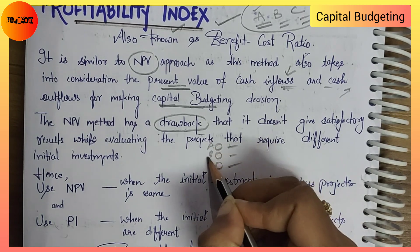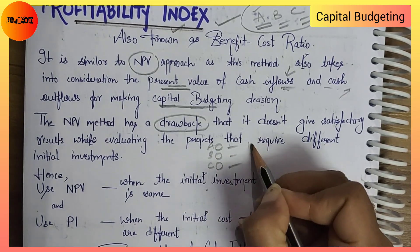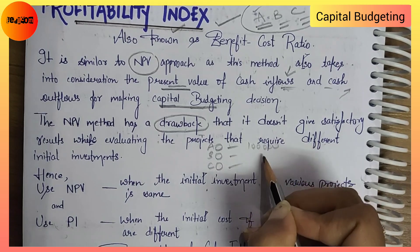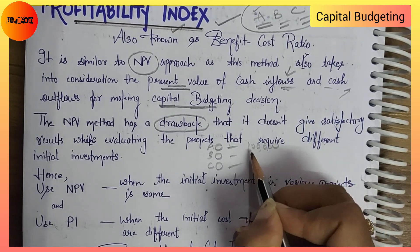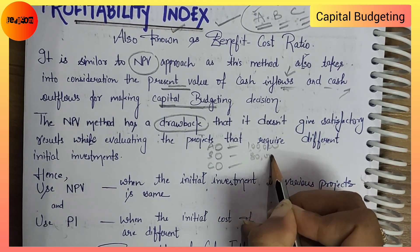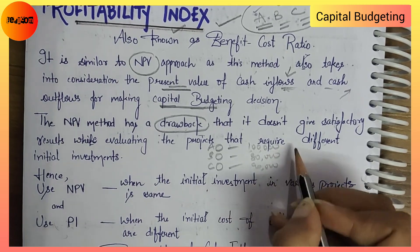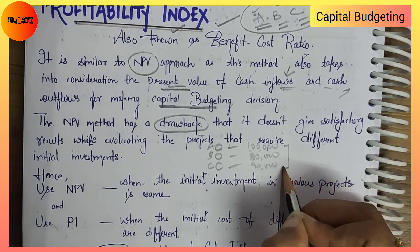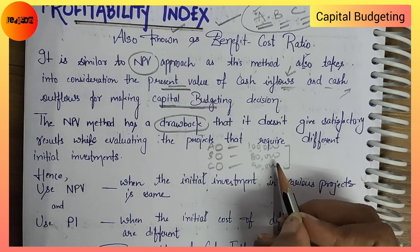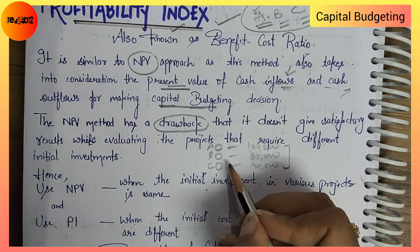Suppose A, B, and C are three different projects, and in these three projects the initial investment amount is different — one is one lakh, another is 80,000, and another is 90,000. So if you have different investments in different projects, then the NPV method will not give satisfactory results.